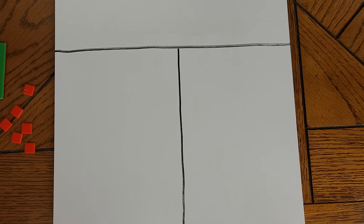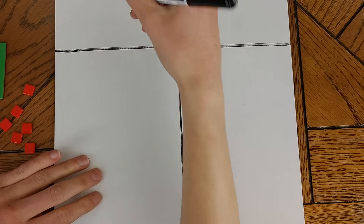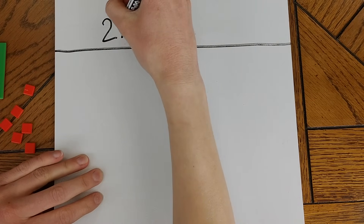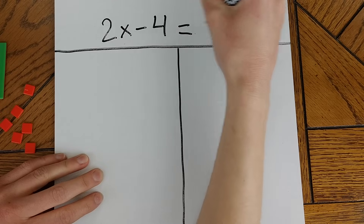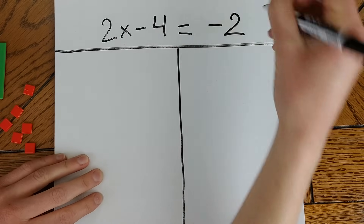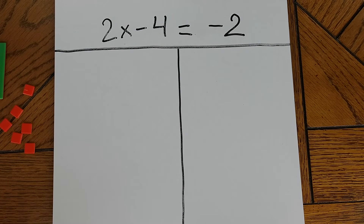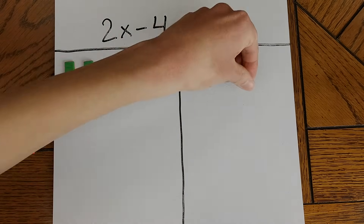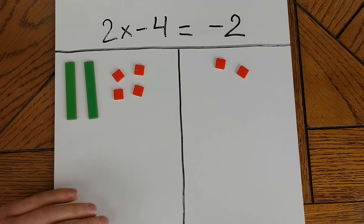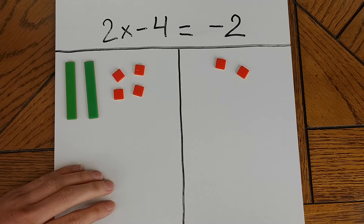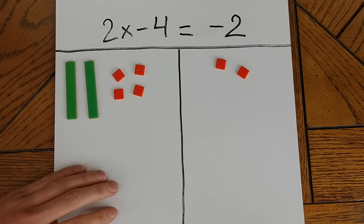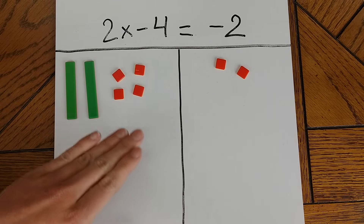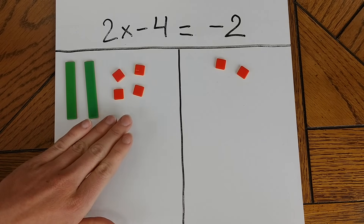Solving multi-step equations with algebra tiles is a lot like solving single-step equations. For example, let's say I have the equation 2x minus 4 equals negative 2. I'll start by modeling each side of the equation with my algebra tiles. Now since I'm solving an equation, I'm going to reverse the order of operations and start with any addition or subtraction I need to do. In this case, I have these minus four tiles over here that I need to get rid of.